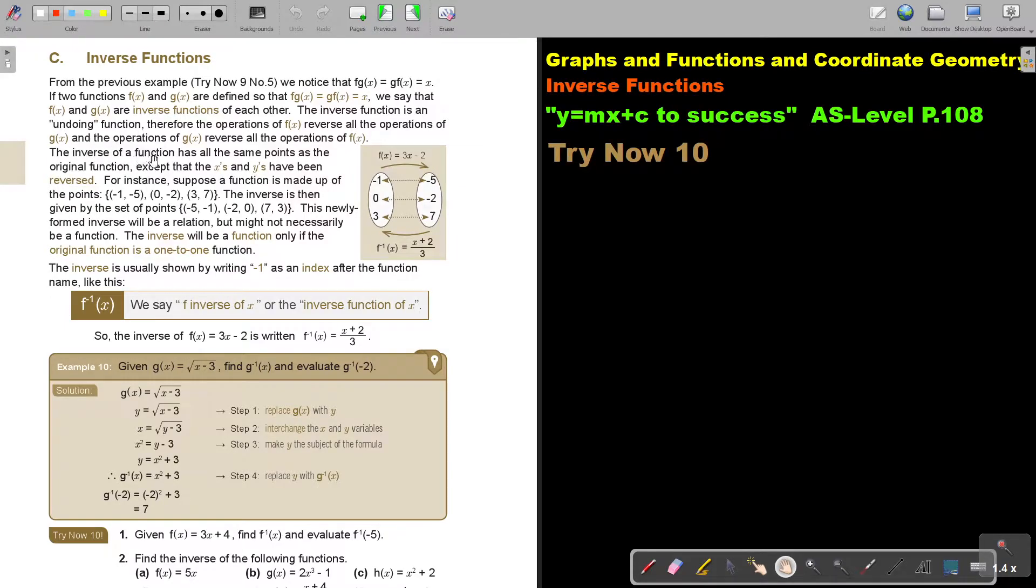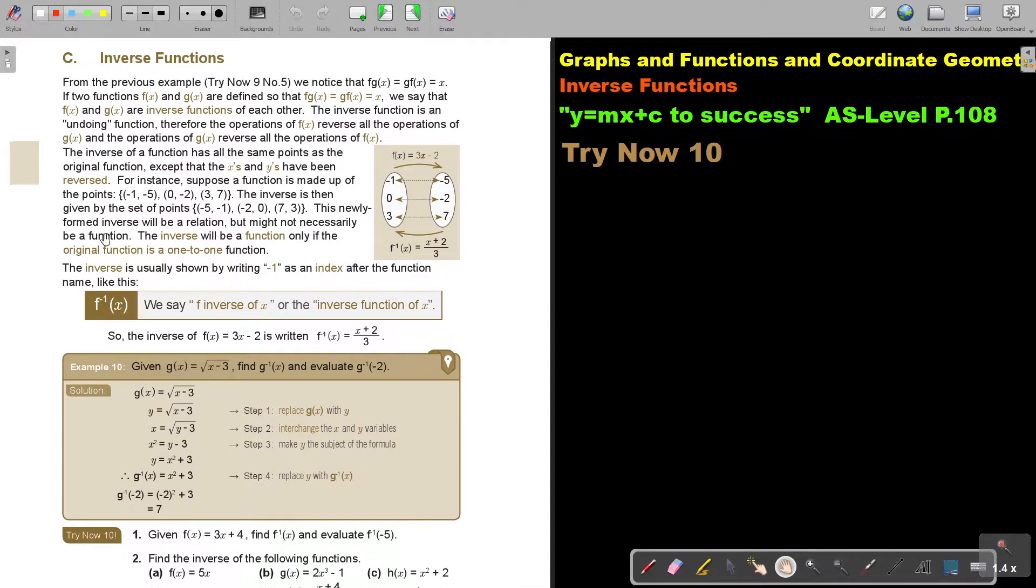The inverse of a function has all the same points as the original function, except that the X and the Ys have been reversed. For instance, suppose a function is made up of these points. The inverse is then given by the set of points where the Y becomes the X, and the X becomes the Y. It's just swap. This newly formed inverse will be a relation, but might not necessarily be a function. The inverse will be a function only if the original function is a one-to-one function.